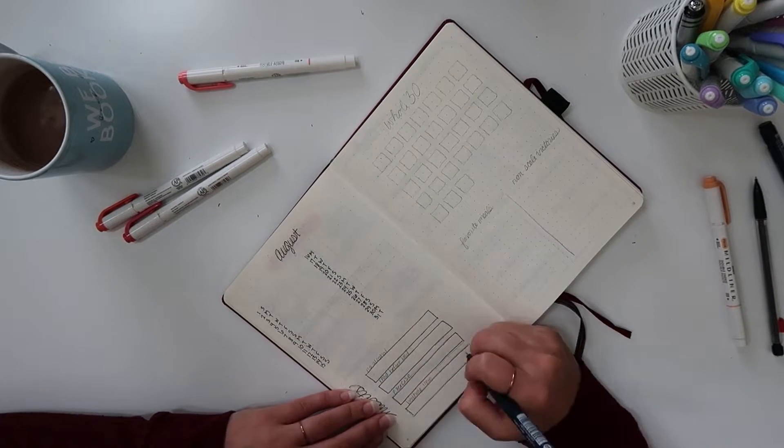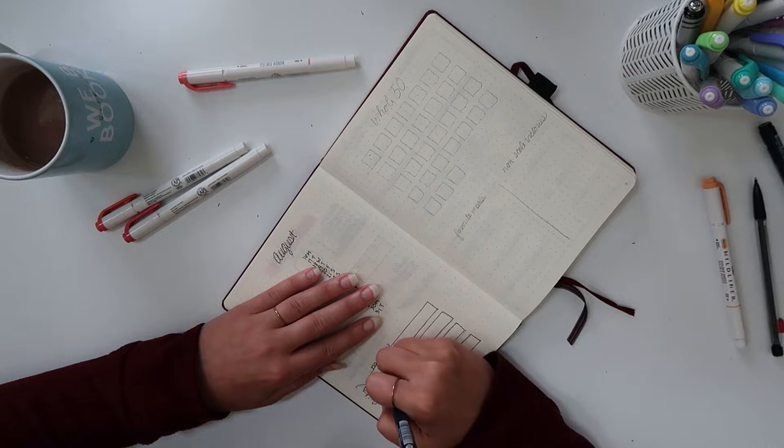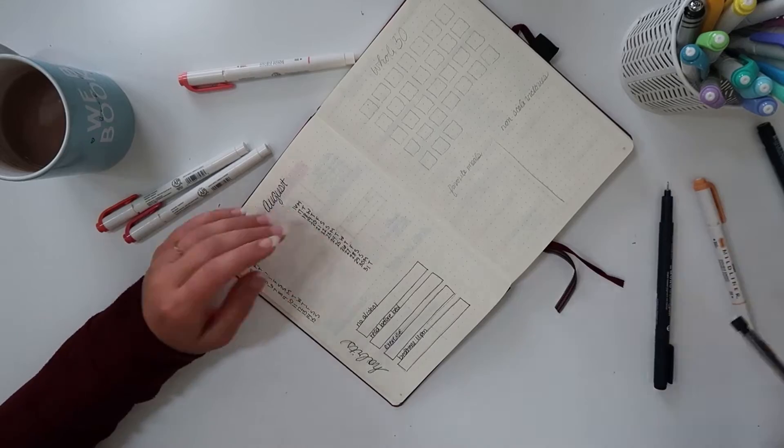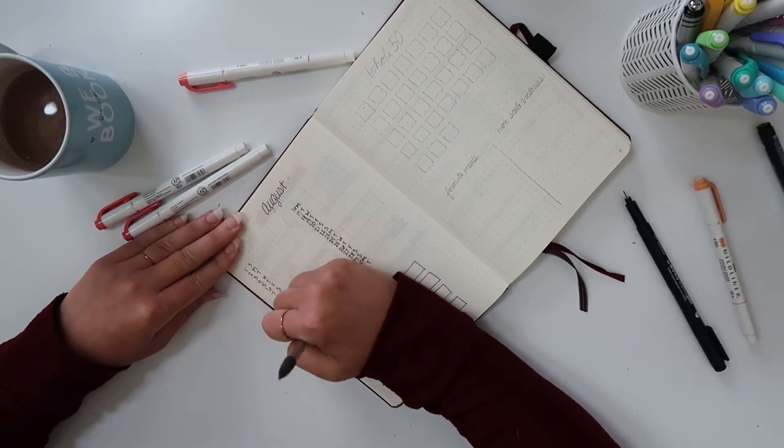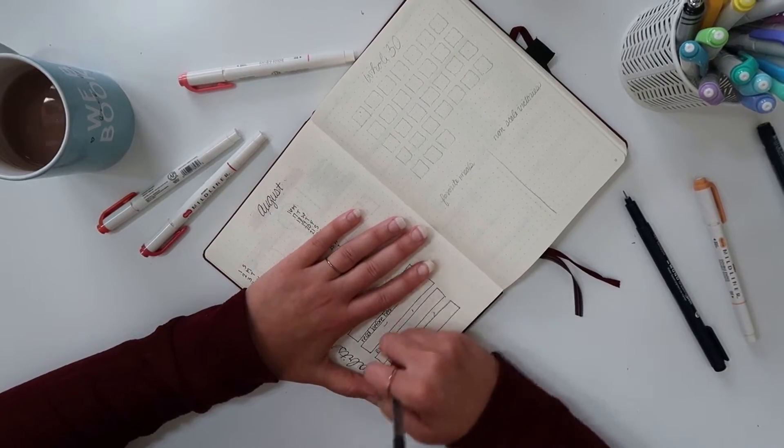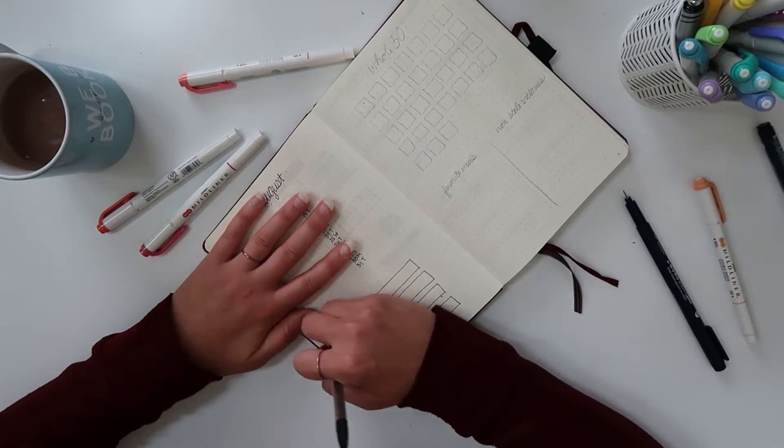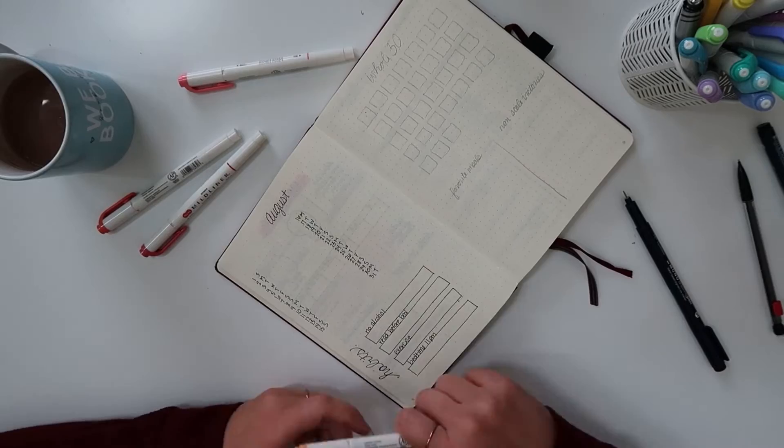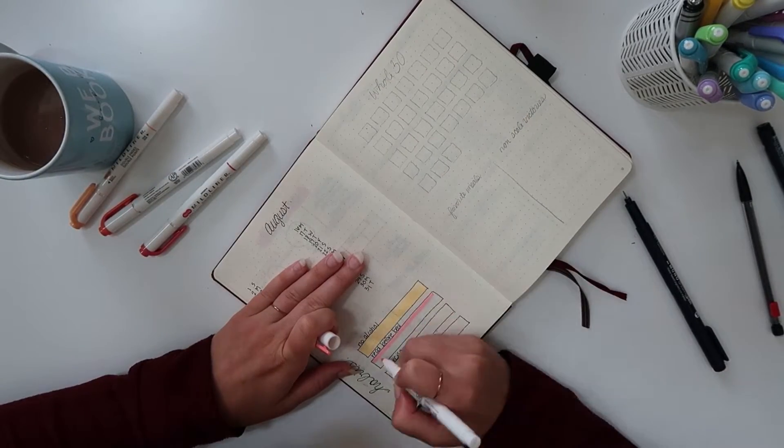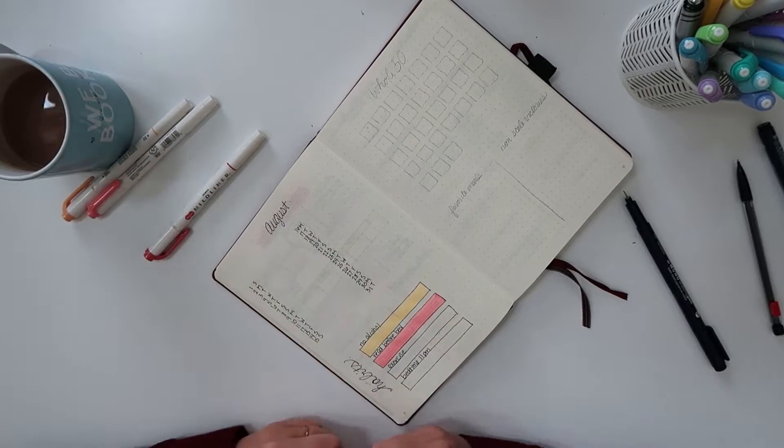And then I also am doing a habit spread with just some things that I wanted to work on. I'm going to be doing a Whole 30 so the no alcohol is kind of a given, but we'll see if I actually get to cross those out. I also have read before bed because I would really like to get my sleep a little bit better. I think it's been lacking, so I think reading before bed and going to bed a little earlier will help with that instead of me watching Mad Men for hours and hours or TikTok either one.